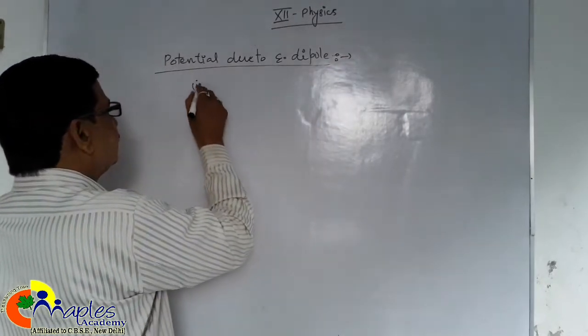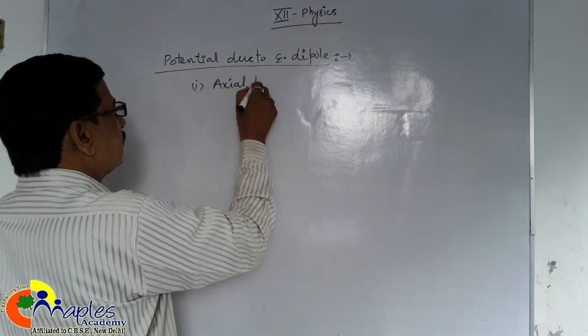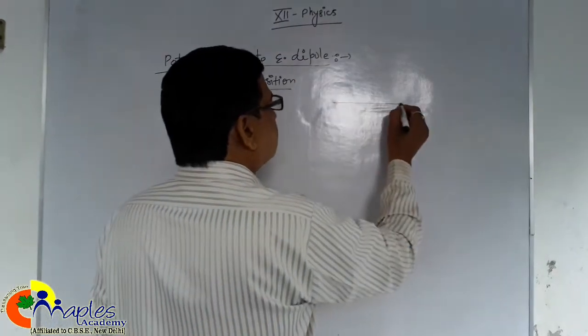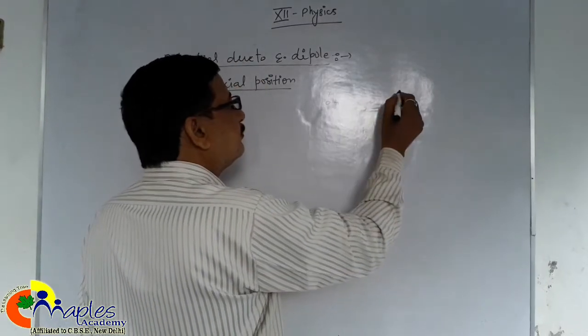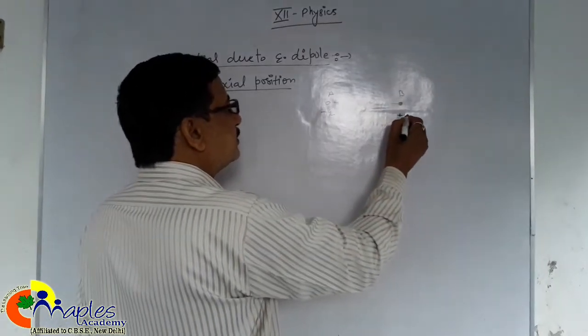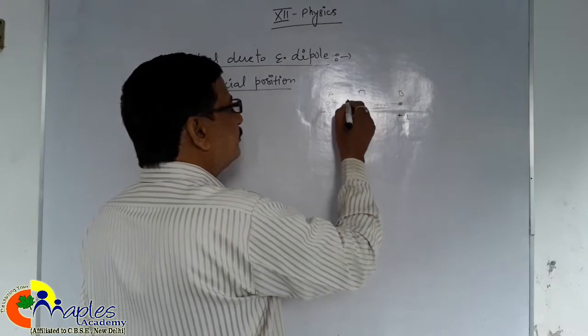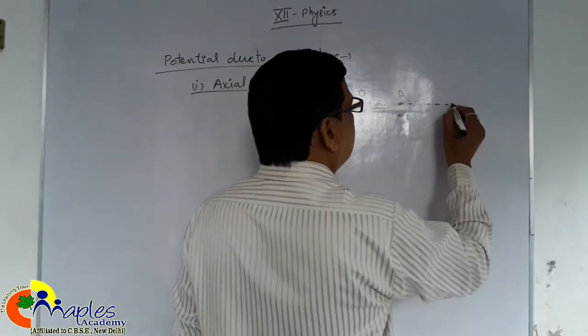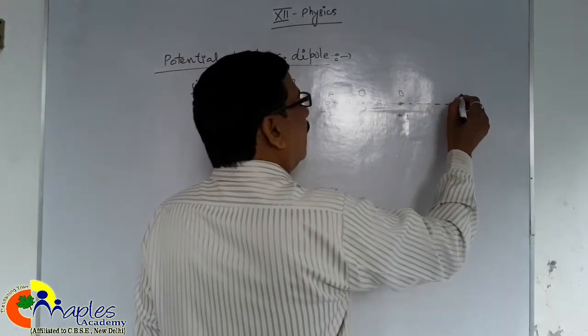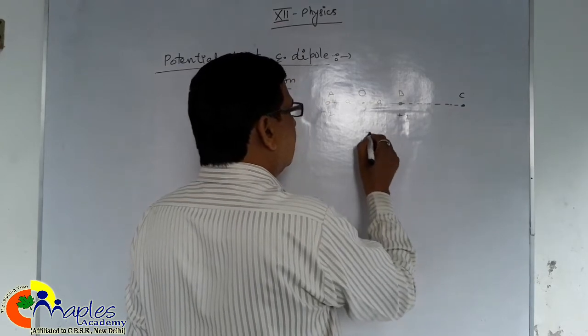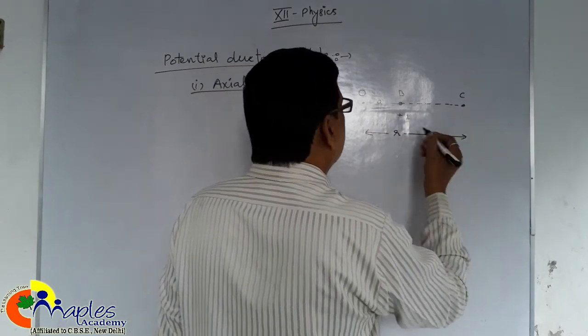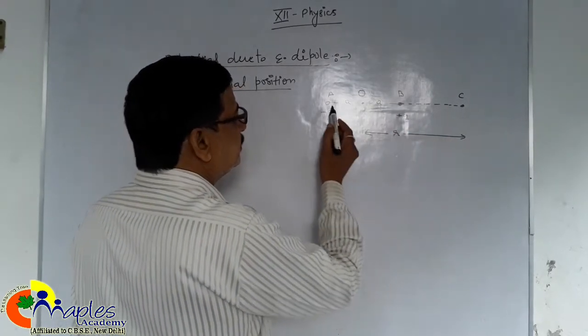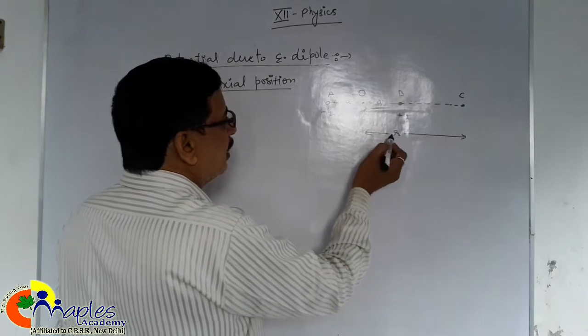First is axial position. Suppose a dipole AB made by minus Q plus Q charges. Midpoint is O. And length of dipole is 2a. We have to find potential at point C at a distance R from midpoint. Then distance of C from B is R minus a. Distance of A from C is R plus a.